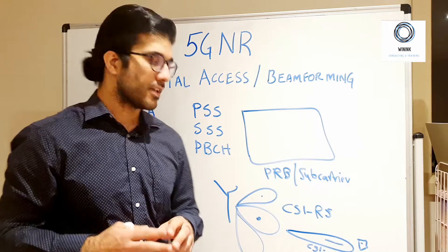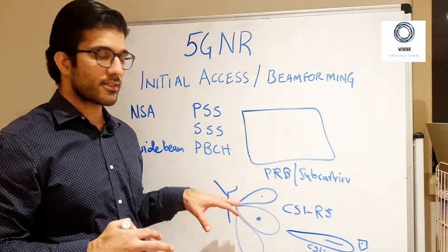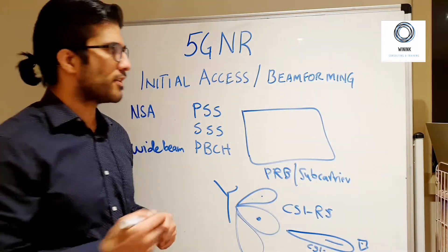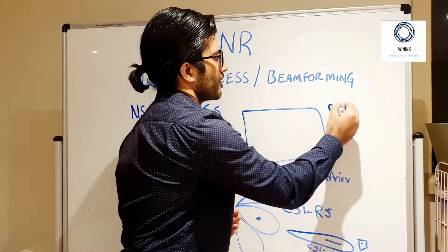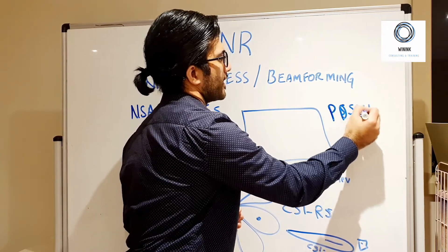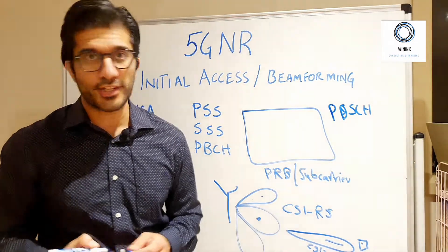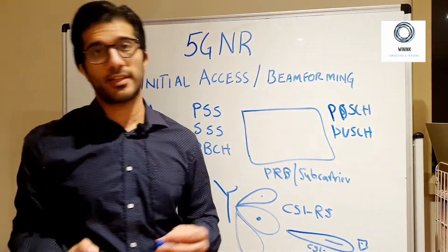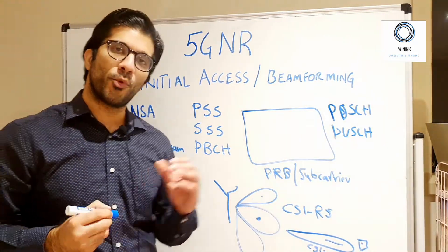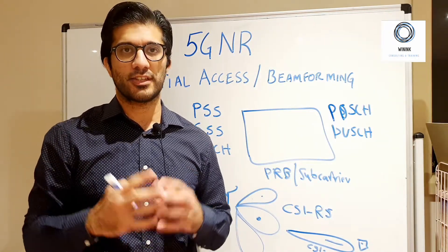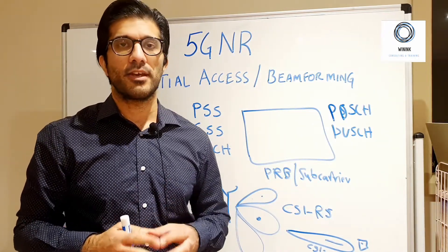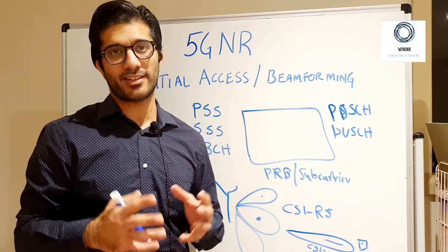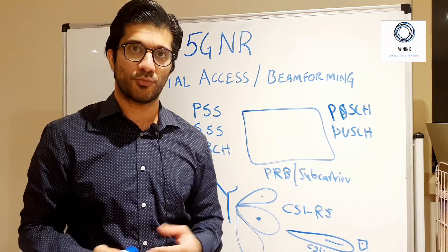In summary, for 5G we use PSS, SSS, and PBCH for initial access, and then we use advanced beamforming techniques to establish access and the narrow beam for data channels. In 5G, for PDSCH — Physical Downlink Shared Channel — and PUSCH — Physical Uplink Shared Channel — narrow beams are used because these are user-specific channels, directed at a particular user to give maximum SINR and maximum throughput.